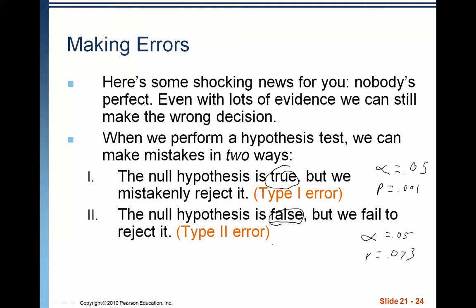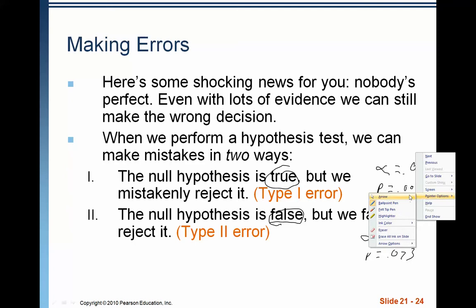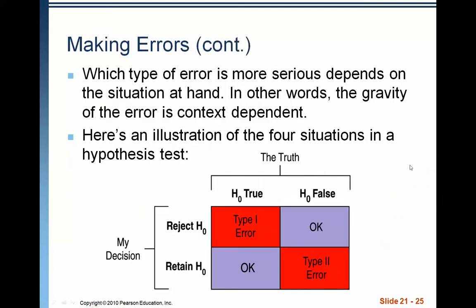We witnessed a very rare event in the other direction where it actually shows that it was true. Different types of errors can have different types of consequences. The type of error that is more serious really depends on the situation at hand — the gravity and consequences of that error are dependent on the context. We'll look at two examples of what the different consequences can be when we make a type 1 or type 2 error.